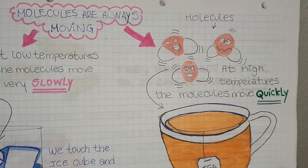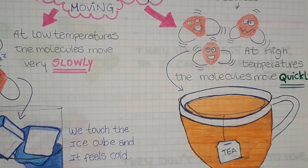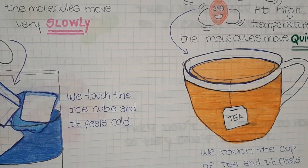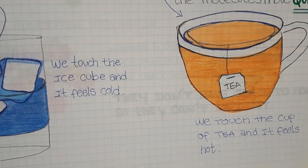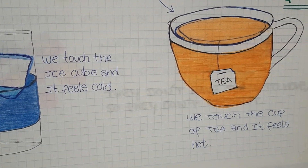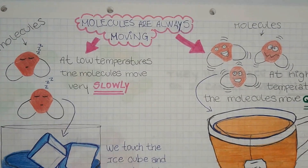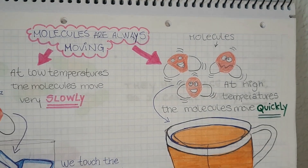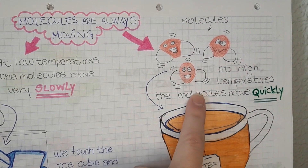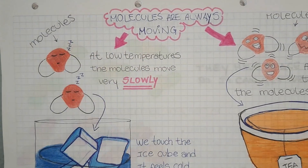And the opposite is when the molecules at high temperatures move quickly, like in a hot tea. In a cup of tea, you have a very, very high temperature. So, when we touch the tea, it's hot. The molecules are moving quickly, can you see? In hot temperatures they move very quickly, and in low temperatures they move slowly.